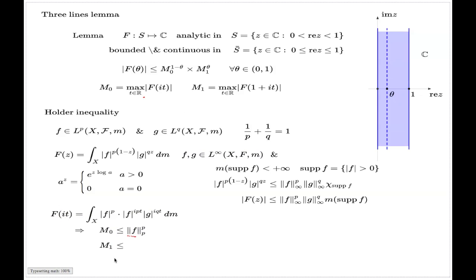Similarly, you can argue that the max of the function over the right-hand side boundary will be controlled by something like this. If you put here the value 1 plus it, this will be just a pure imaginary number, which will render this factor unital. And this will split into one factor g to the power q, and the other factor with a pure imaginary exponent, which will render this factor again unital.